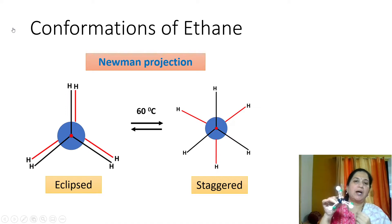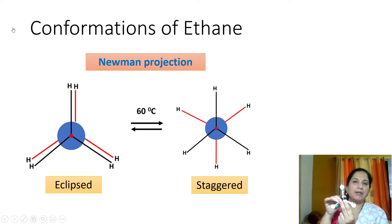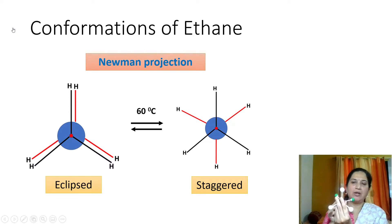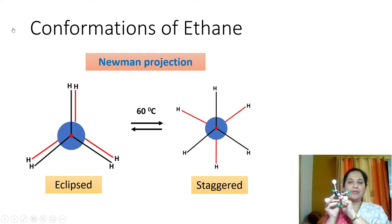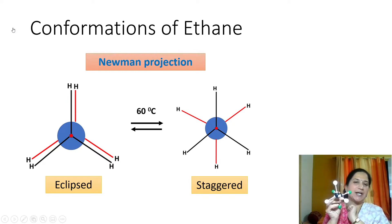Now, suppose I am rotating the back carbon, or the carbon-carbon bond, through 60 degrees — keeping the front carbon as it is and rotating the back carbon through 60 degrees. Now watch the molecule: you can see the front carbon, three hydrogens, and you can also see the back three hydrogens.